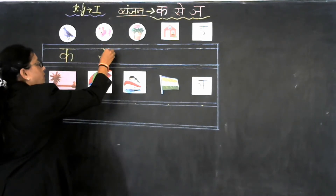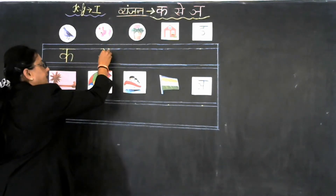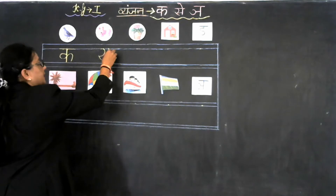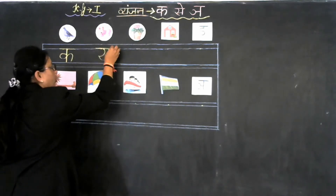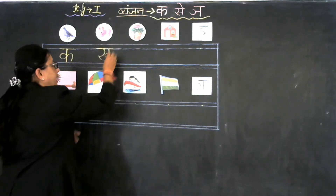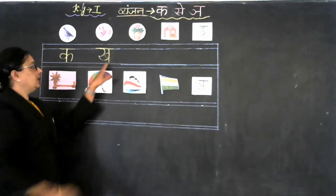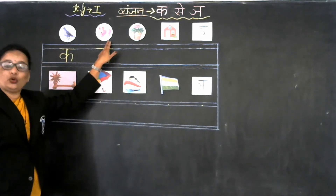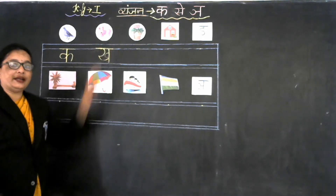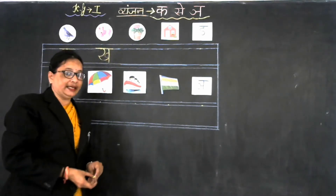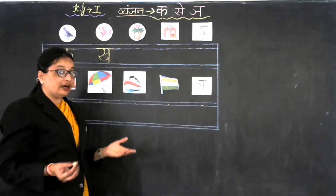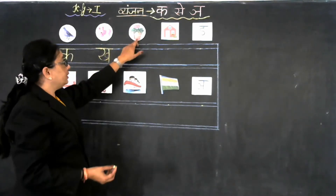And then a small standing line like this. And make a small half circle like this. And sleeping line on the top like this. Ka kabootar ka. Now our next Vyanjan is Ga.